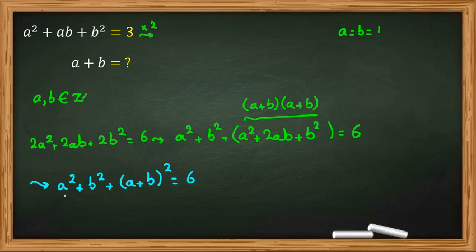So we know, for example, a and b cannot be 3 or negative 3, then it will be greater than 6. So a squared can be 0 or can be 1 or can be 2 squared 4, only this. Also b squared: 0, 1, 4. We have these cases.